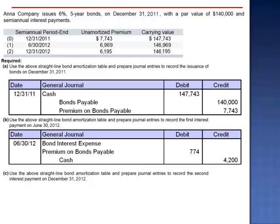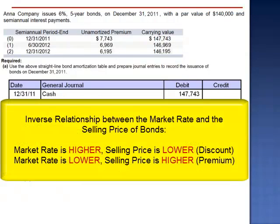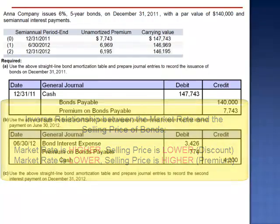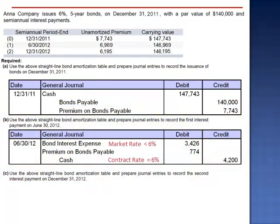Bond interest expense is the amount necessary to balance the journal entry: $3,426. Bond interest expense is a function of the market rate on the date of issuance. When bonds sell at a premium, the market rate on the date of issuance is lower than the contract rate — it must have been less than 6% — which is why bond interest expense is less than the cash payment.